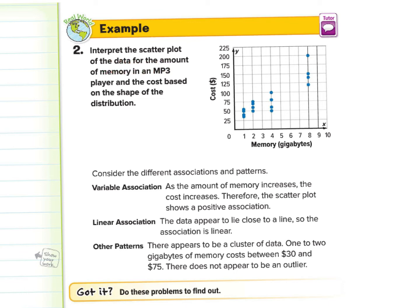So let's take a look at example two here so that you're able to do the next two. Interpret the scatter plot of the data of the amount of memory in an MP3. An MP3 is like an iPod player. And the cost based on the shape of the distribution. So we have the memory in gigs. One to ten gigs. And then we have the cost ranging from about thirty to thirty five dollars up upwards towards high forties and fifty and so on. And you can see it goes up as high as two hundred dollars.